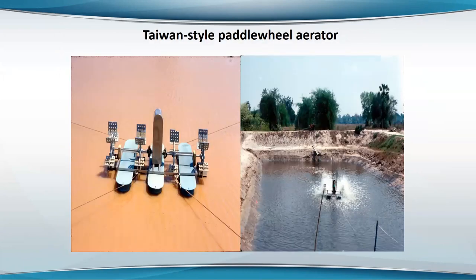Aerators are made to splash a lot of water into the air. The Taiwan-style paddle wheel aerator is a simple type quite popular in Asia — they're probably the most widely used aerator in the world, but they're not very durable and not very efficient. They drill holes in the paddles which causes a lot of friction, and they've got too many paddles. But it's the most widely used aerator in the world because it's so cheap.